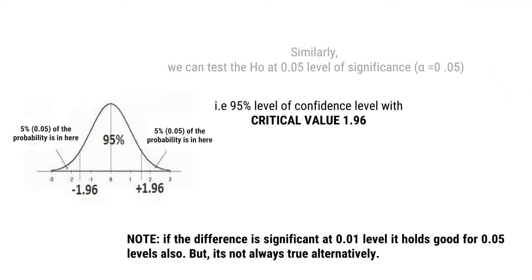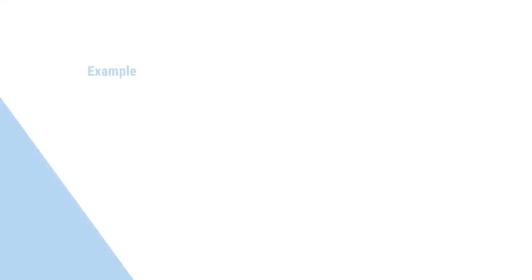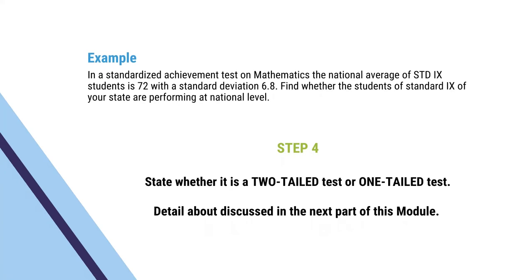This concept is very important. You need to understand and have complete clarity of the level of significance at 0.01 and 0.05. Coming to the last step: to state whether the test is a two-tailed test or a one-tailed test. The detail about the type of test will be discussed in the next chapter of this module. You are going to respond to the forum questions, review the document, and finally assess yourself with the help of a short quiz. I wish you all the best.